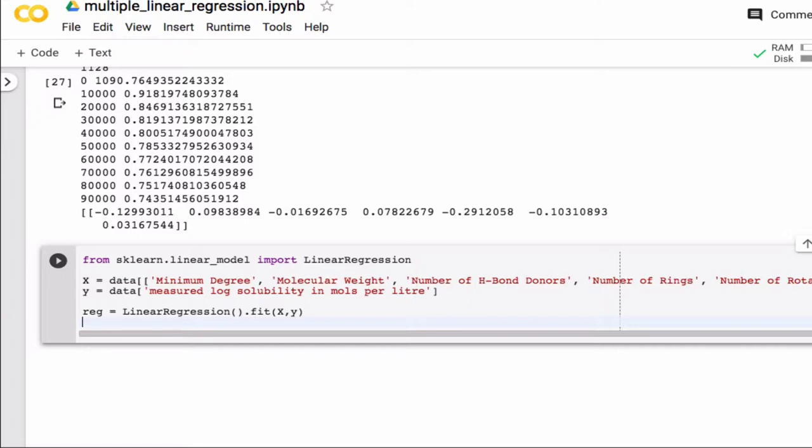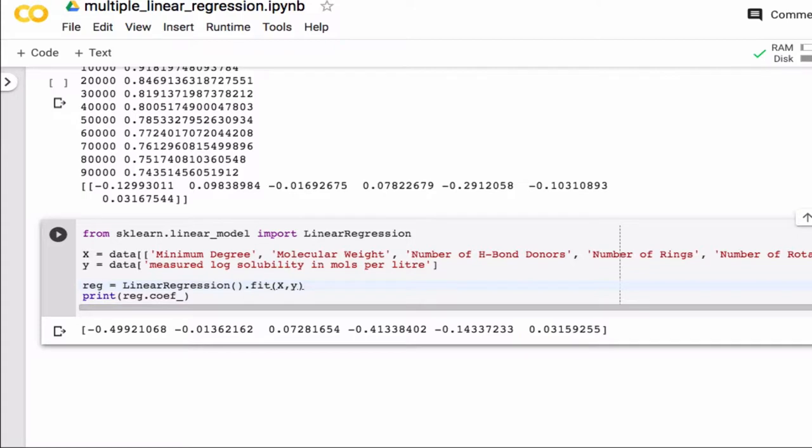So it looks like it works. Now the model basically has found the best parameters, and we can print that out. So like this. So these are the coefficients.